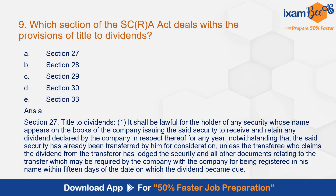Section 27 of SCRA says it shall be lawful for the holder of any security whose name appears on the books of the company issuing the said security to receive and retain any dividend declared by the company in respect thereof for any year, notwithstanding that the said security has already been transferred by him for consideration, unless the transferee who claims the dividend from the transfer has lost the security and all other documents relating to the transfer which may be required by the company.